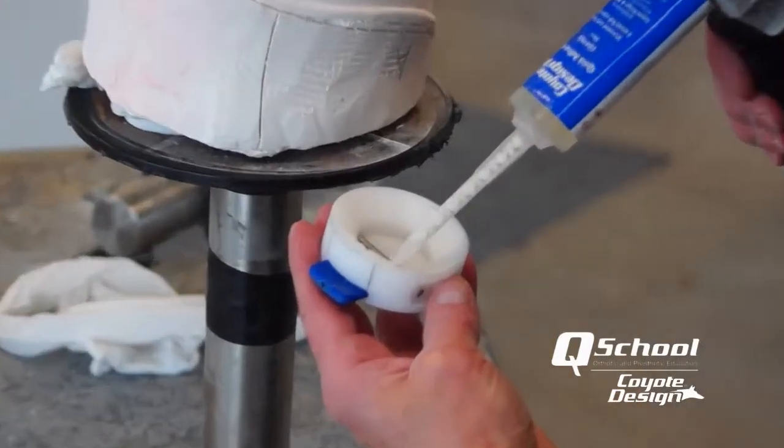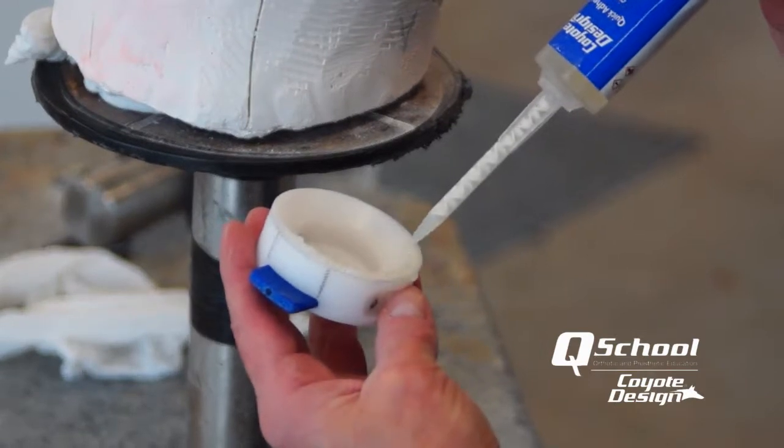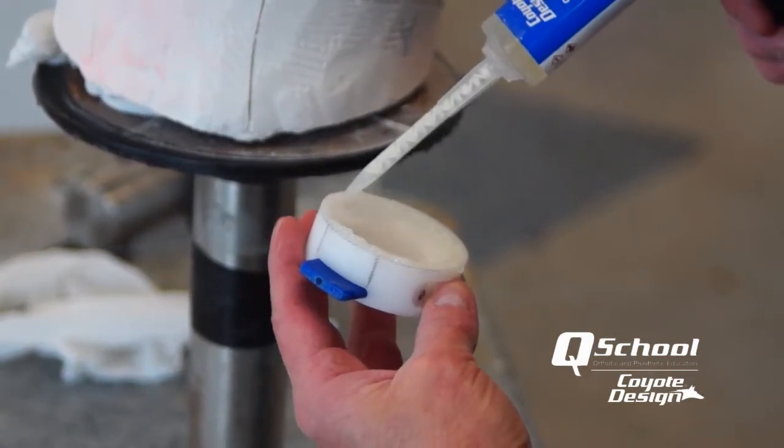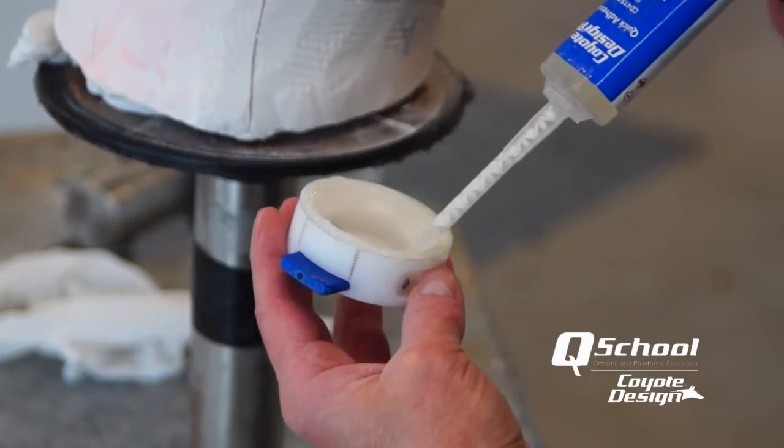When you go to seal your puck on the top there, you don't have much surface bond area. So put a fair amount close to the outside edge of your puck. This allows you to get better adhesion so it doesn't snap off when you're pulling your plastic.